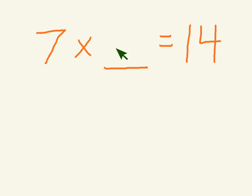If you don't know, just try a number. What if we put 1? 7 times 1 is 7, so that won't work. 7 times 2 is 14. There it is. The other factor is 2.